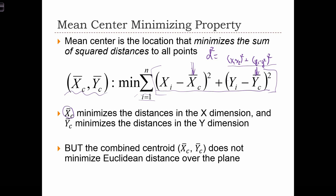And yc minimizes the distances in the y dimension. But the combined centroid xc, yc does not minimize the Euclidean distance over the plane.